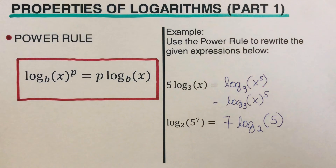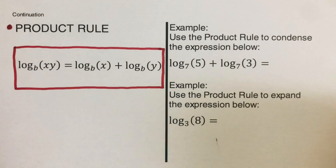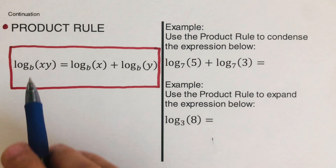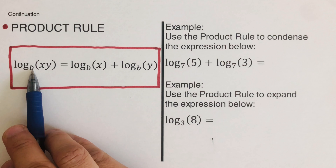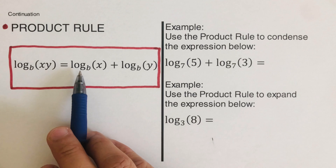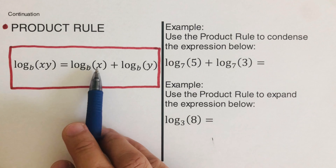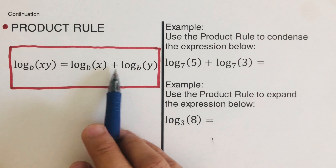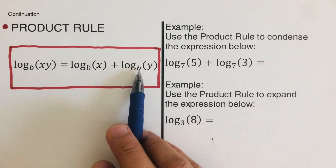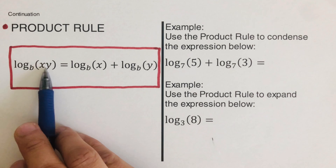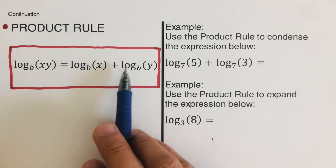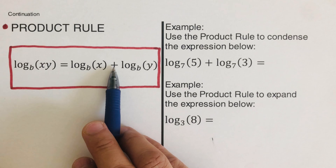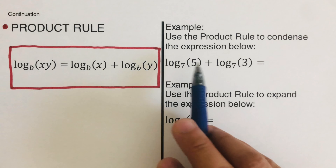Now let's have the next rule: the product rule. The product rule states that log of x times y to the base b can be expanded as the sum of log of x to the base b plus log of y to the base b. Anytime we have multiplication, we split them into two log expressions and add them together.